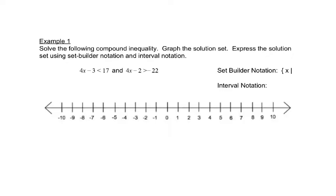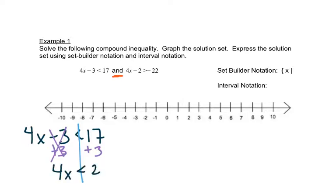So here's an AND statement. We have 4x minus 3 is less than 17 AND 4x minus 2 is greater than negative 22. So we'll start off by solving those inequalities separately. We'll add 3 to both sides, just like we did in the last section.